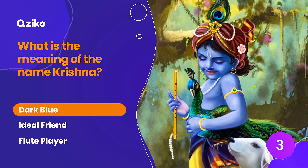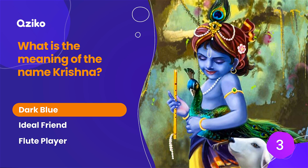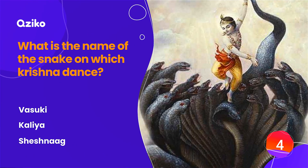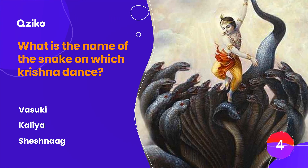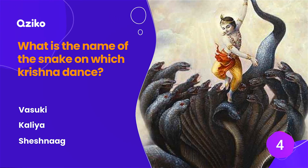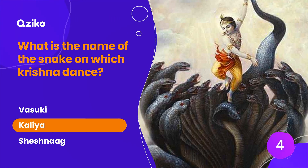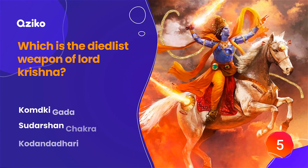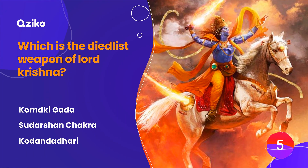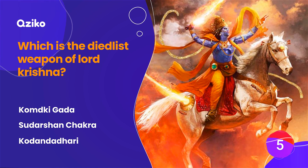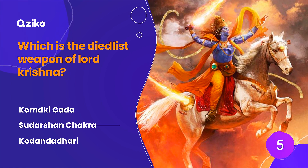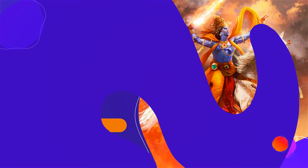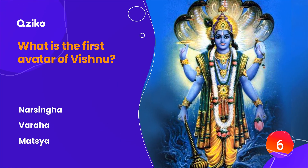The right answer is dark blue. What is the name of the snake on which Krishna danced? The right answer is Kalia. Which is the deadliest weapon of Lord Krishna? The right answer is Sudarshan Chakra.